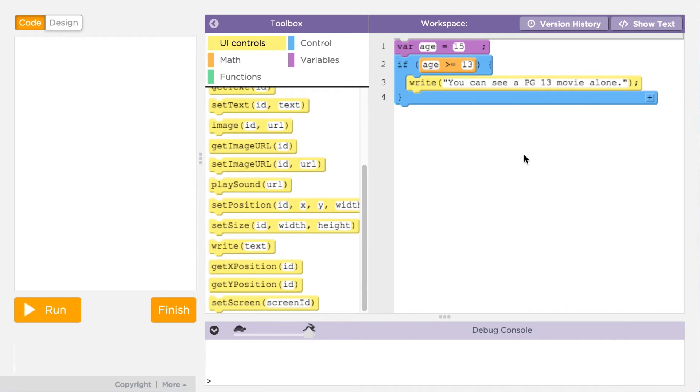So in our example, whenever the expression age greater than or equal to 13 is true, the program will write to the screen that you are old enough to see a PG-13 movie.